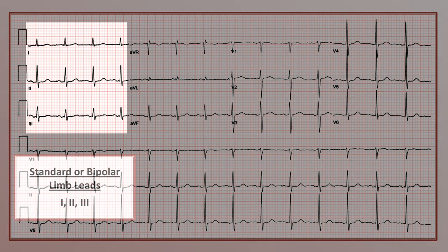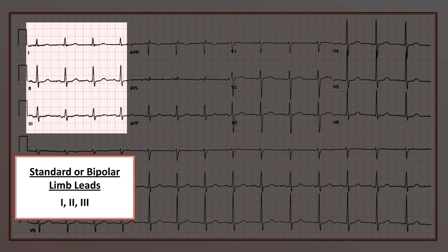For example, first are these three leads, which are known as the standard limb leads, or occasionally the bipolar limb leads. They are designated by the Roman numerals for 1, 2, and 3.